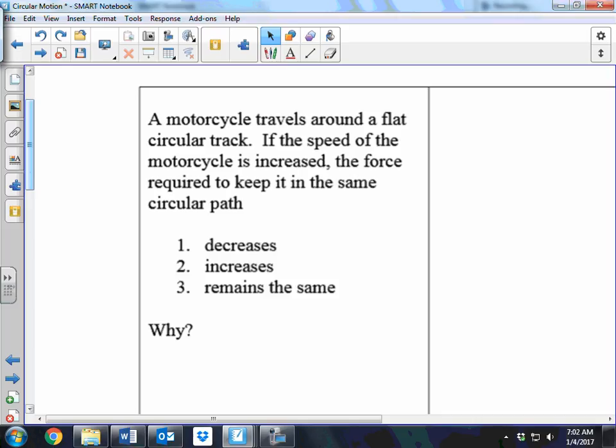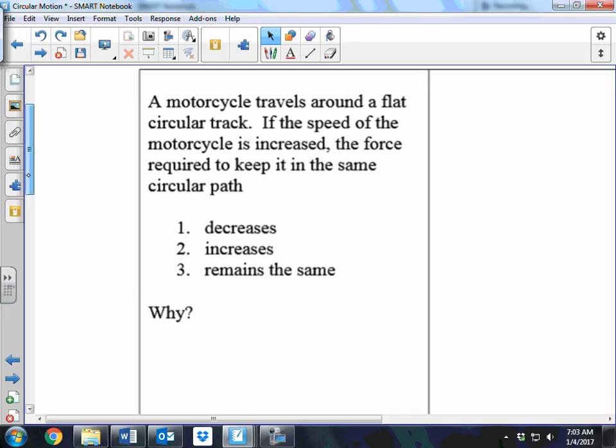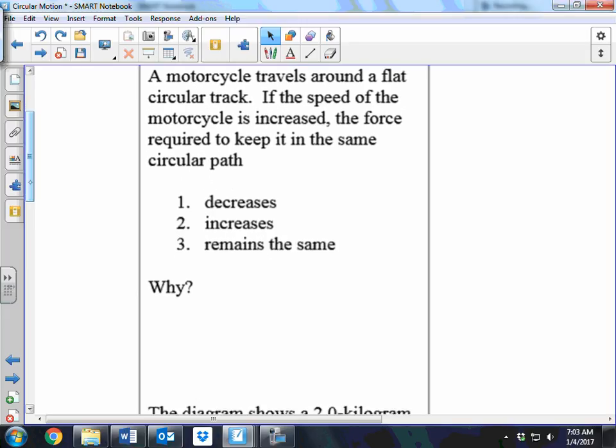So flip over to the back page and we're going to practice real quick. A motorcycle travels around a flat circular track. If the speed of the motorcycle is increased, the force required to keep it in the same circular path decreases, increases, or remains the same. So here's what's happening. I'm on a, I'm traveling on a circular track and I start going faster, right?